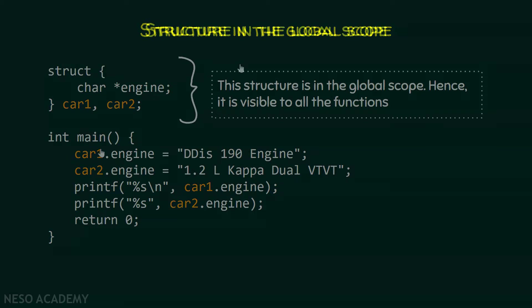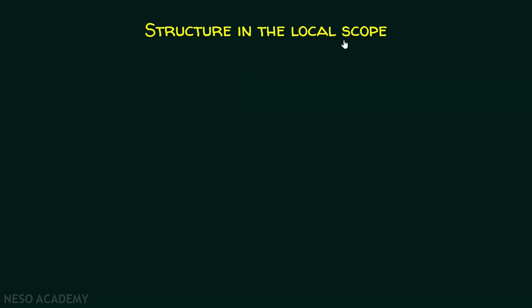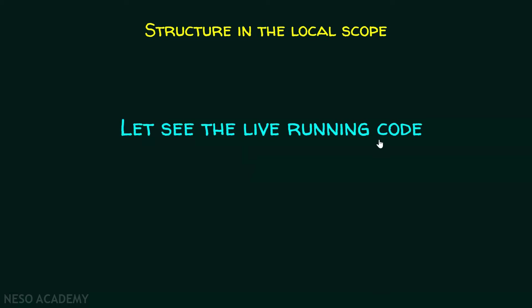But what happens if we want a structure in the local scope? For this purpose, we will see a live running code.